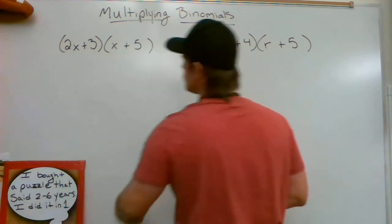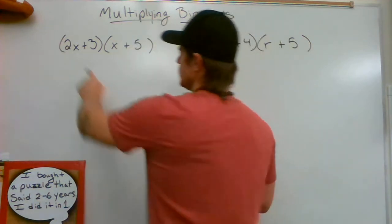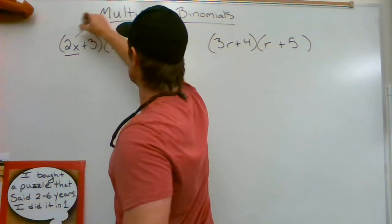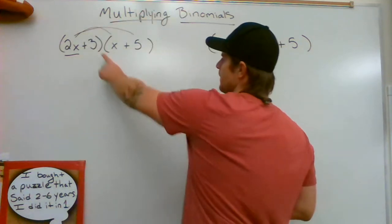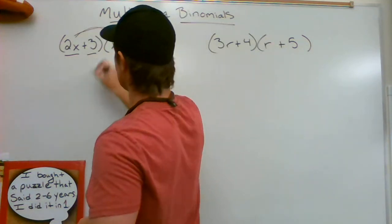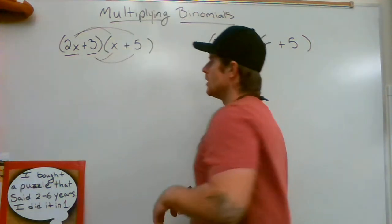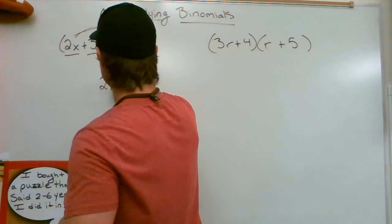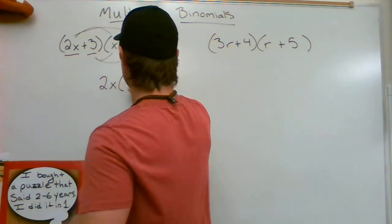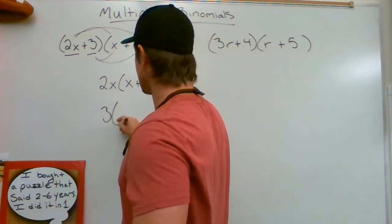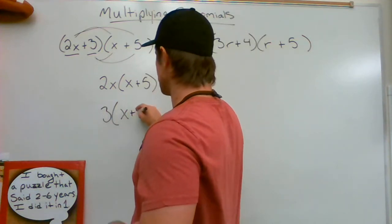First thing you want to do is write out two separate distributions. You're going to use the first term and distribute that to each of the terms in the second binomial, then use the second term and distribute that to each term in the second binomial. So the first one's going to look like 2x times (x + 5), and the second one's going to look like 3 times (x + 5).